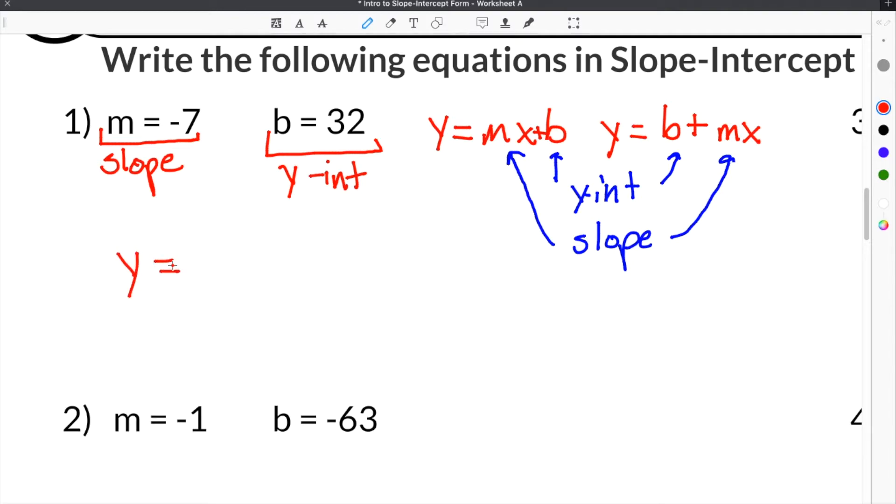So we have negative 7X because we know that M goes with X. And then we have our Y-intercept of 32, so we will just include our plus 32 at the end. And that's going to be the equation.